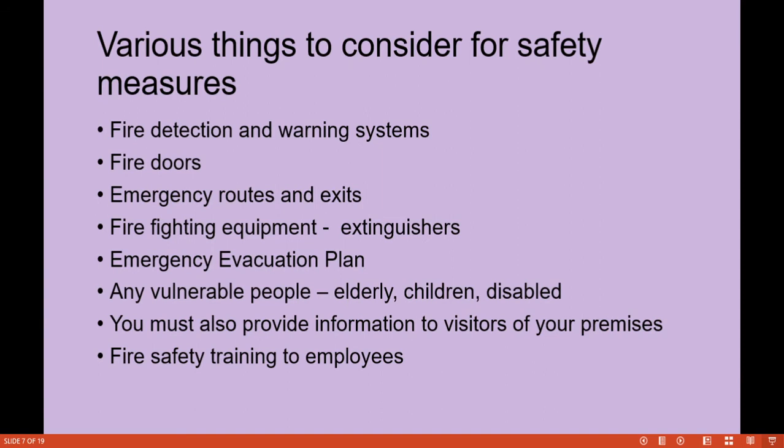Safety measures to consider: first, fire detection and warning systems — you must have warning systems for employees or visitors within the facility or building. Second, fire doors, emergency routes, and exits — there must always be emergency exits and routes in case a fire occurs. Third, firefighting equipment — equipment such as extinguishers must be placed in the establishment. Fourth, an emergency evacuation plan should be in place in case of a fire emergency.